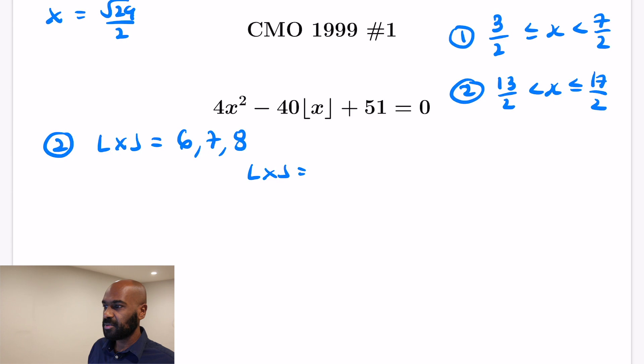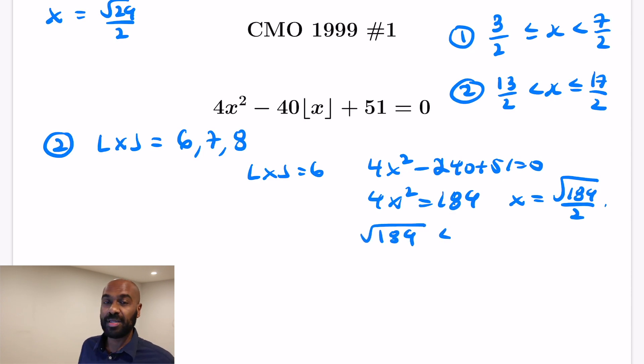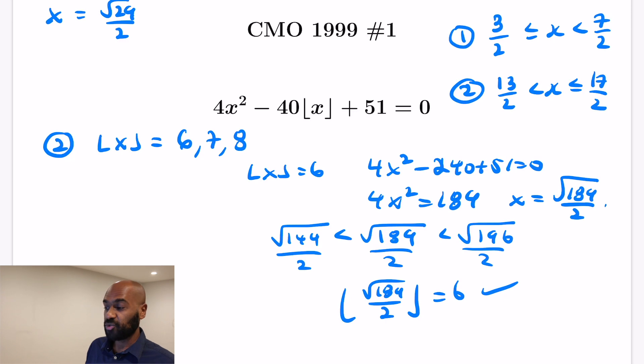So let's check each of these and see what happens. Starting with the floor of x being 6, we're going to play the same game that we did with the other values, but we need to make sure that things don't go awry. So here we get that 4x² - 240 + 51 = 0. So rearranging in this case, we get 4x² = 189, and so x is √189/2. So this is where it's useful to have perfect squares in our mind and sort of know what they are. So 196 is a perfect square, it's 14². And the square just below 189 is 144. And so this value, the square root of 144 is 12. So we're lower bounded by 6, upper bounded by 7 here. And so the floor of this actually is 6, and so we're happy.